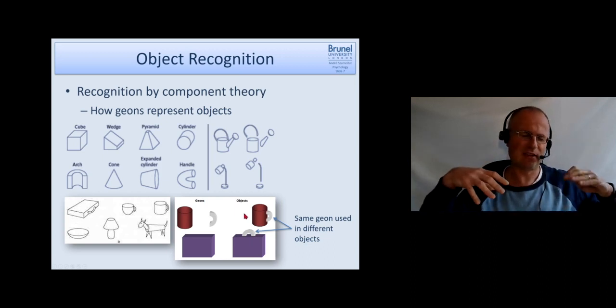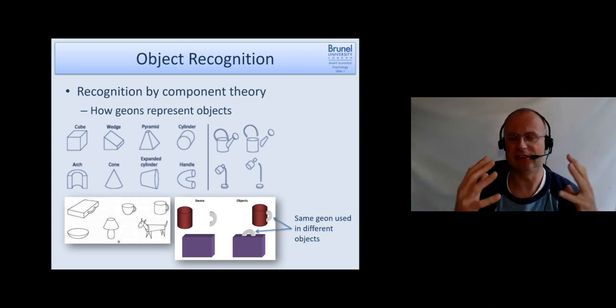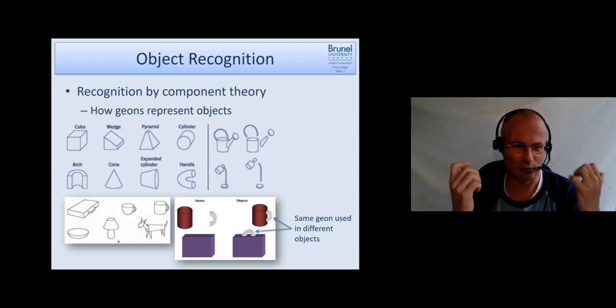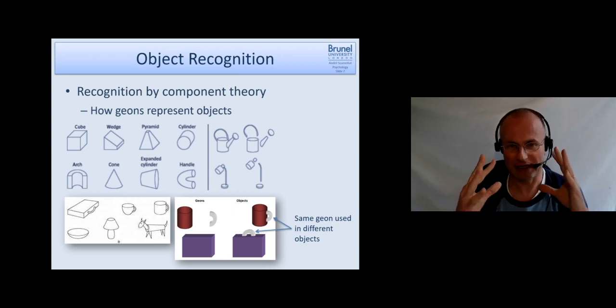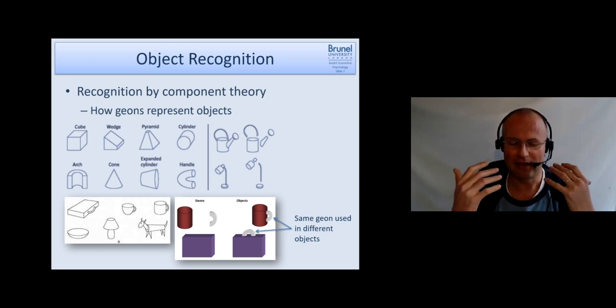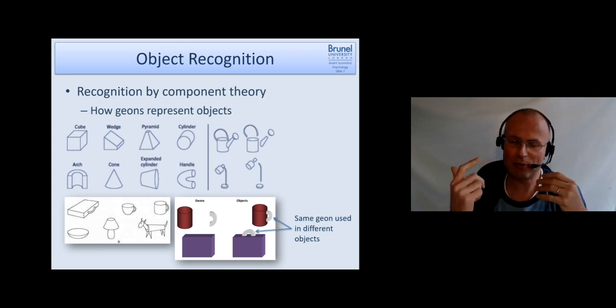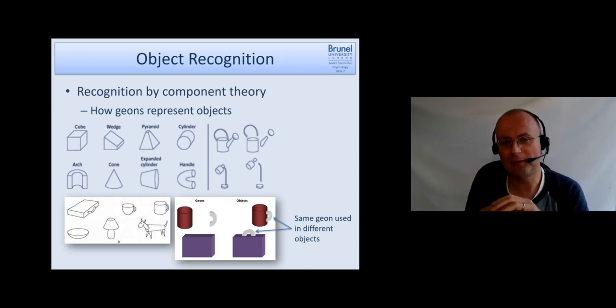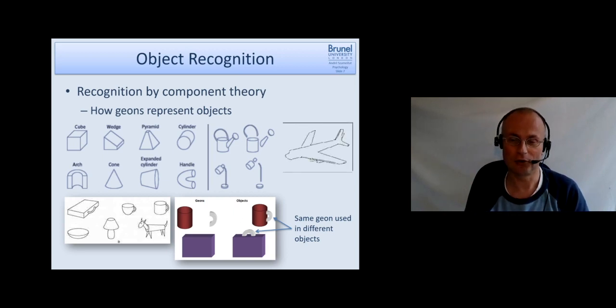So the idea is that this indefinite set of objects which exist in the human world can be described by a small set of basic geometric shapes and that makes object recognition feasible or that our mind can handle it and doesn't have to be able to memorize and represent literally billions of different objects which we may perceive. But instead they are broken down into components which help us to do that.